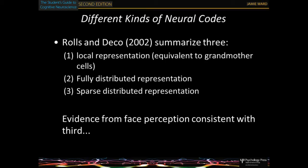There are various ways you could represent something like a face. You could have neurons responding only to very specific things — equivalent to grandmother cells, a local representation. The alternative is a fully distributed representation: all neurons respond to everything but more to some things than others. Another way is in between — sparse distributed — and that seems to be how it works. You've got some neurons that code the same information and show quite a selectivity.